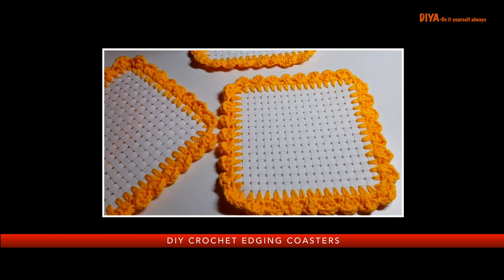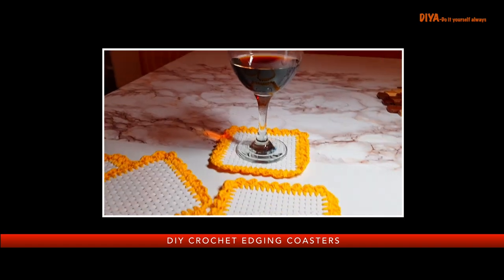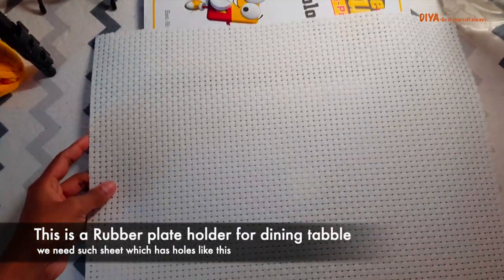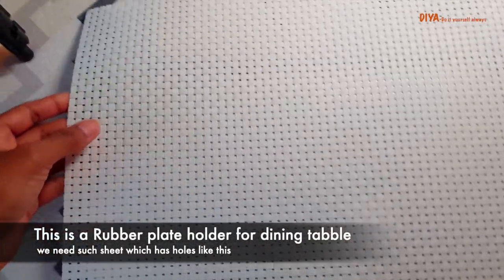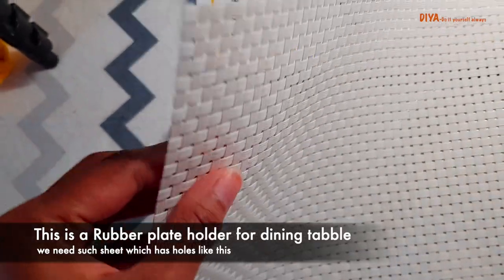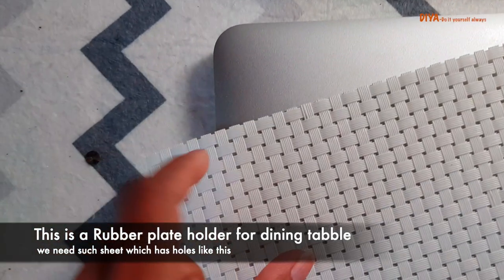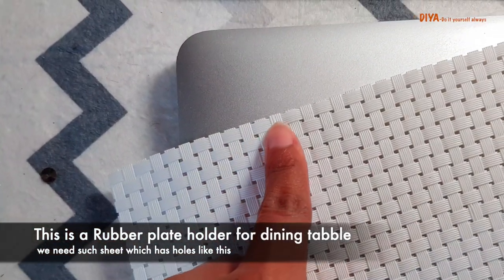Hey guys, it's Vishali, welcome back to my YouTube channel. Let's check out how to make this crochet edging coaster. The very first thing that we need is this rubber plate holder. We need such a sheet which has holes like this, and this is so soft. You can buy such plate holders where you get things for kitchen and dining table decor.